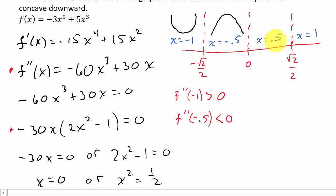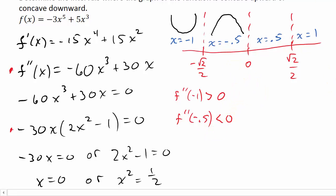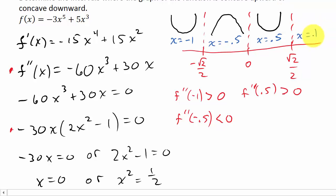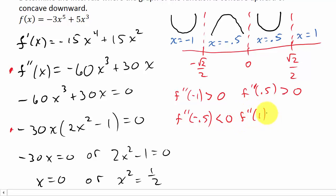Now plugging in 0.5: f double prime of 0.5 gives positive 7.5, which is greater than zero, so it's concave upward on that interval. For x equal 1: f double prime of 1 gives negative 60 plus 30, which equals negative 30. That's negative, so it's less than zero.